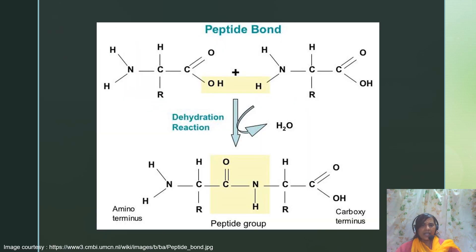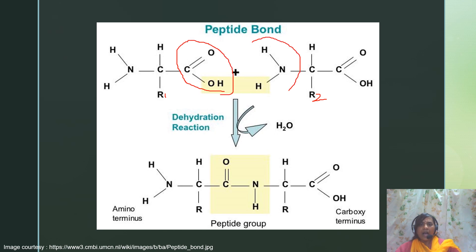Let us see how a peptide bond is formed. A peptide bond is a linkage formed between two amino acids. Here you can see this is one amino acid — R1 CHNH2 COOH — and this is the second amino acid — R2 CHNH2 COOH. A peptide bond is formed by the reaction between the alpha carboxyl group of one amino acid with the alpha amino group of the next amino acid.